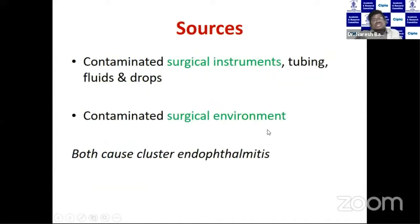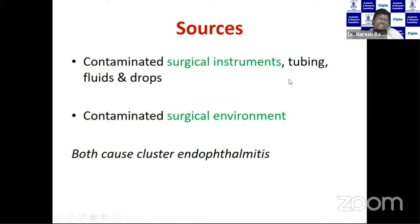Other sources include contaminated surgical instruments, tubings in the phaco machine, fluids, and drops. When these fluids, drops, and tubings are involved, we end up with cluster endophthalmitis. We had a case series of 120 cases due to a single source — anesthetic drops used for phaco surgery — which had Burkholderia cepacia contamination.